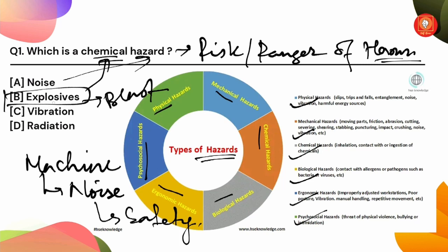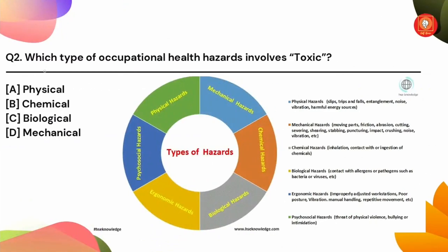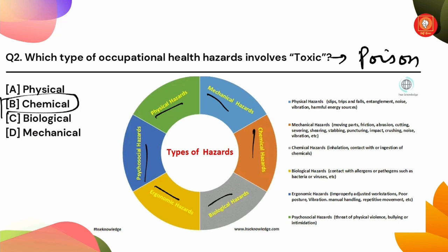Which is the motive of occupational health hazard? It involves toxic substances. Toxic means poison. The types of hazards are: physical, mechanical, chemical, biological, ergonomic, and psycho-social. These are the types of hazards — toxic hazards included.